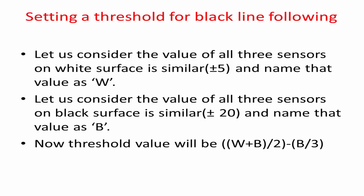Adjust the potentiometer if similar readings on all three sensors are not obtained for a particular surface. Setting the threshold is an important task in line following. Consider the value of all three sensors on white surface is similar — a difference of plus or minus 3 will do. If not, adjust the potentiometer, and name that value W. Consider the value of all three sensors on black surface is similar — a difference of plus or minus 20 will do — and name that value B. The threshold value can then be calculated using the formula given here.